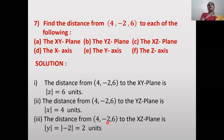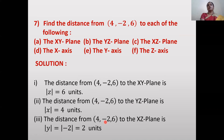Distance from point (4, -2, 6) to the XZ plane = |y| = |-2| = 2. Remember: distance is always a positive quantity, so take the modulus. To summarize: distance to XY plane → |z|; to YZ plane → |x|; to XZ plane → |y|.